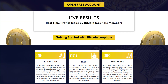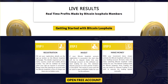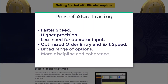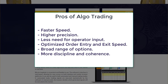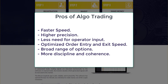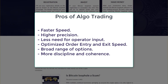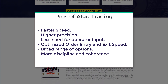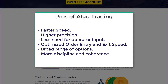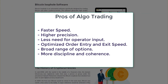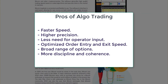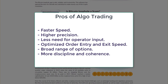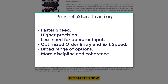You might be thinking, what is the purpose of Algo Trading? Some of the key pros of Algo Trading are faster speed, higher precision, less need for operator input, optimized order entry and exit speed, broad range of options, and more discipline and coherence. Algo Trading is an effective trading method that is widely used by many people who want to enhance their trading game, with several distinct advantages over traditional methods of manual trading.